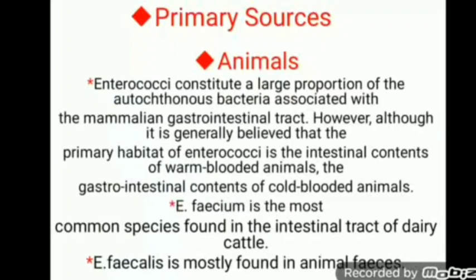In primary sources, there are three categories: animals, humans, and environment. In animals, Enterococci constitute a large proportion of autochthonous bacteria — meaning bacteria native to a particular region. They are always associated with the mammalian gastrointestinal tract. Although it is generally believed that the primary habitat of Enterococci is the intestinal contents of warm-blooded animals — including birds and mammals — they are also present in the gastrointestinal contents of cold-blooded animals.